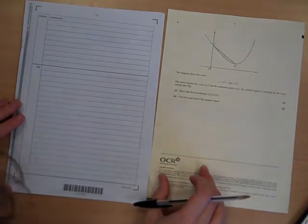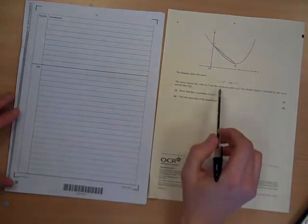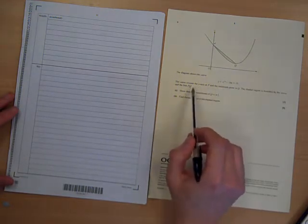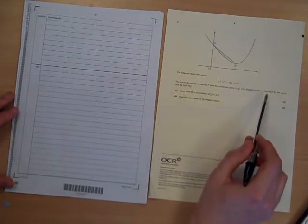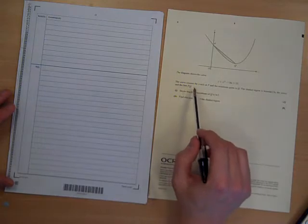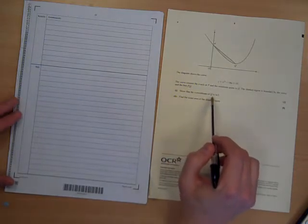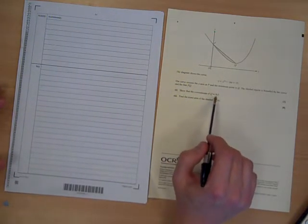OK, final question. Last few minutes to get this done. The diagram shows this curve crosses these two points. The shaded region is bounded by the curve and the line PQ. It shows that the x-coordinate of Q is ln3.